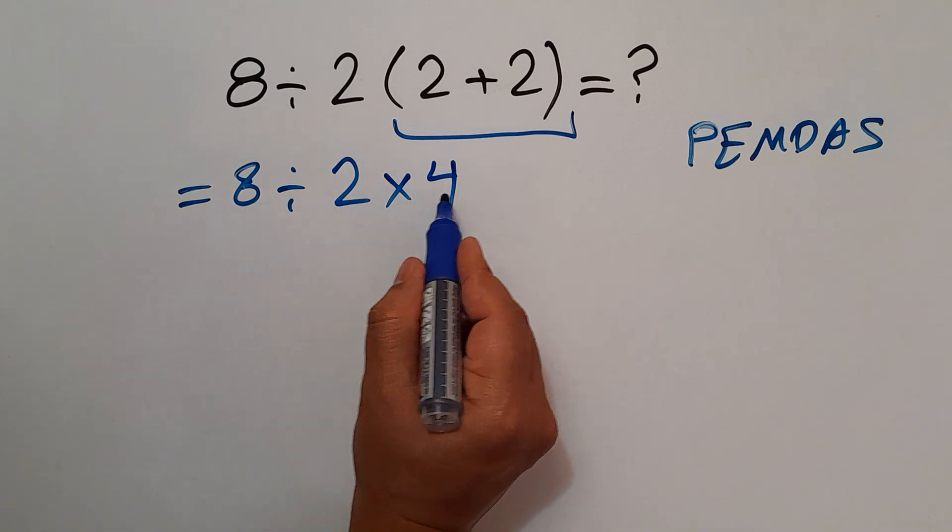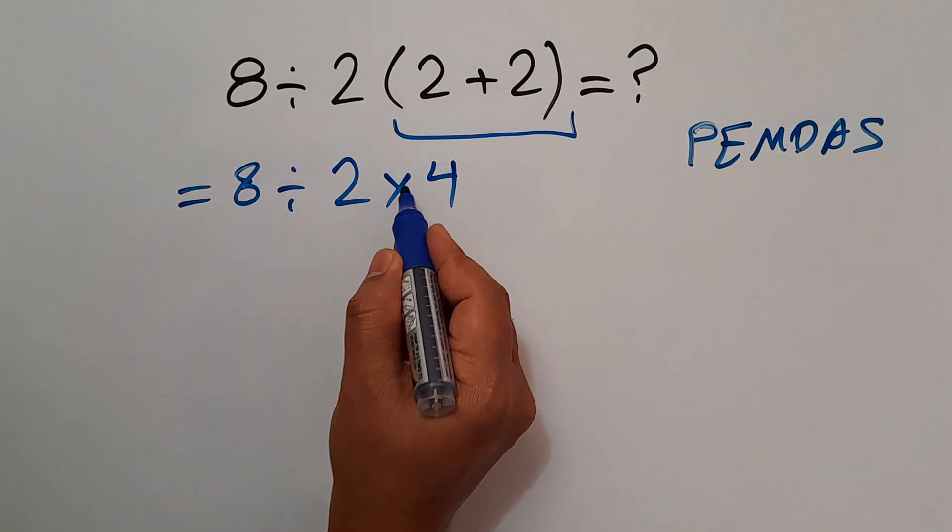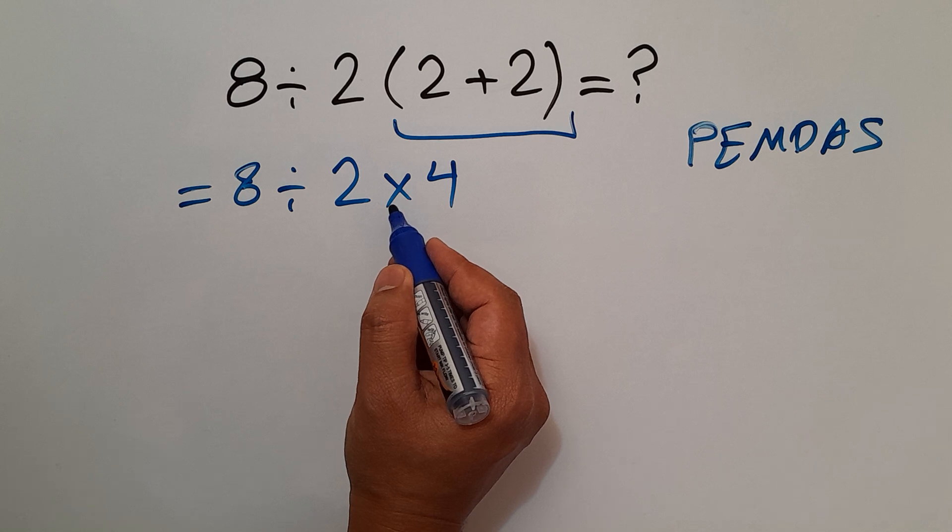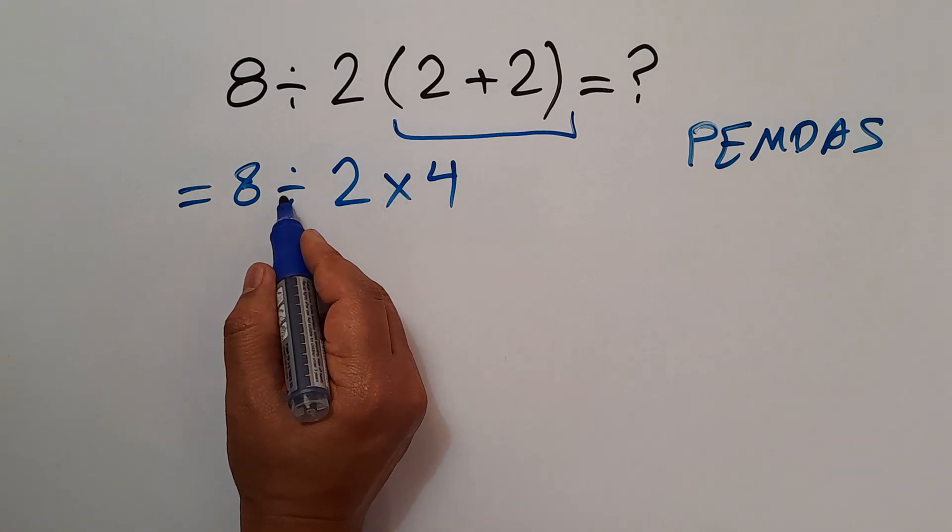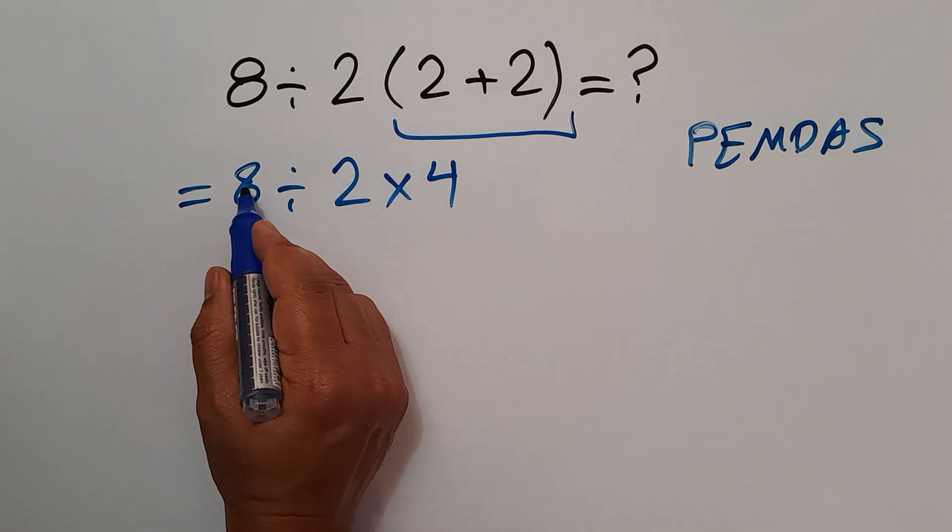Now in this expression we have 1 division and 1 multiplication. As we know, multiplication and division have equal priority and we have to work from left to right.